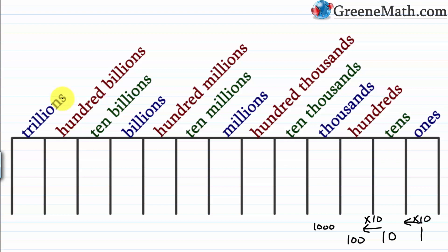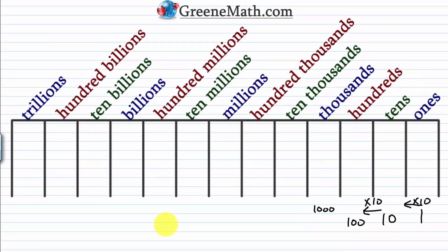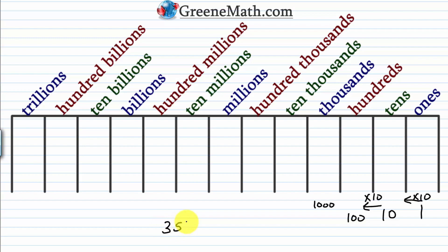For example, with 355, if you can't remember what place the 3 is in: start at the rightmost digit — that's the ones. Move left, multiplying by 10: 1 times 10 is 10, so the next digit is in the tens. Then 10 times 10 is 100, so the leftmost digit is in the hundreds.